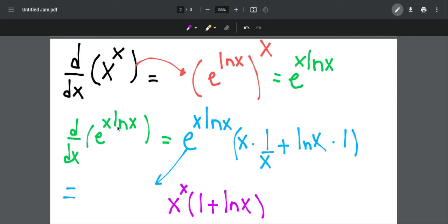In this case, we should use the product rule. The first x times the derivative of the second, 1 over x, plus the derivative of the first multiplied by the second part.